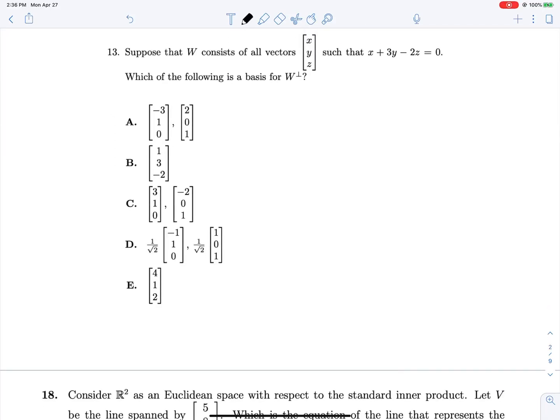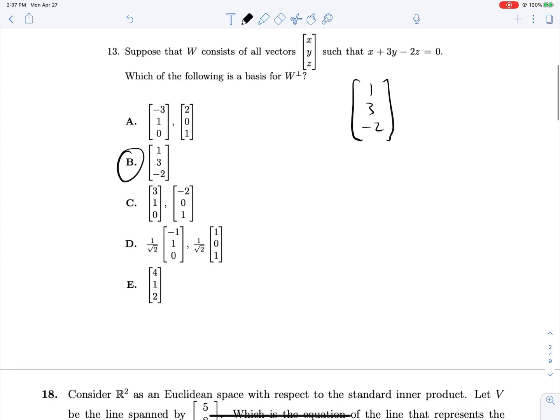Suppose that W consists of all vectors X, Y, Z such that X plus 3Y minus 2Z equals 0. Which of the following is a basis for the orthogonal complement of W? This one is almost equally easy. We know back from Calc 3 that the normal vector to a plane equation like this is just the coefficients on X, Y, and Z.